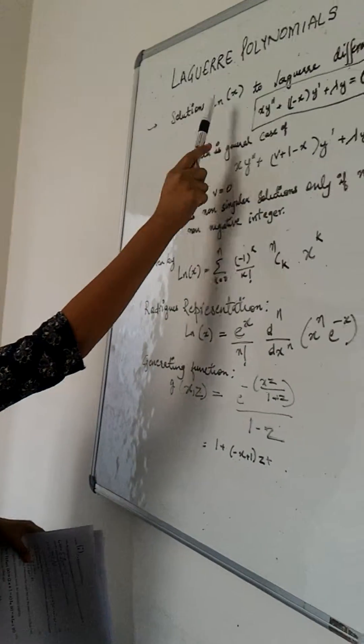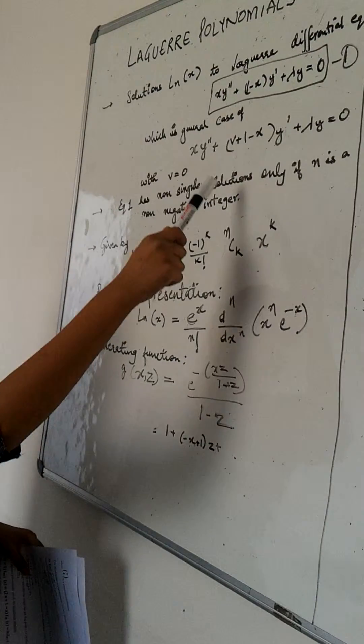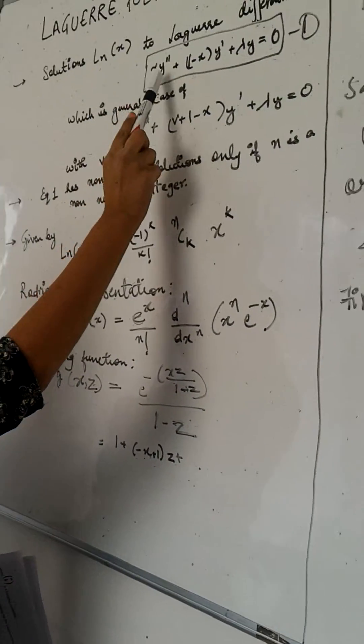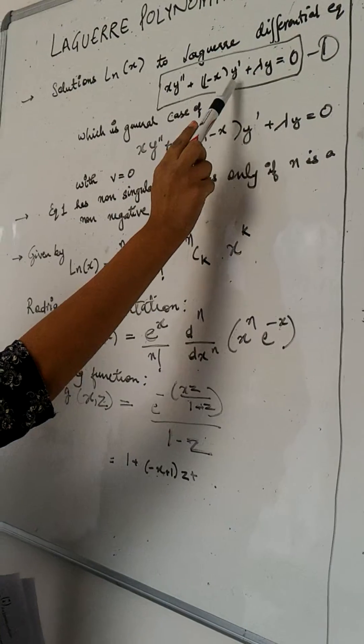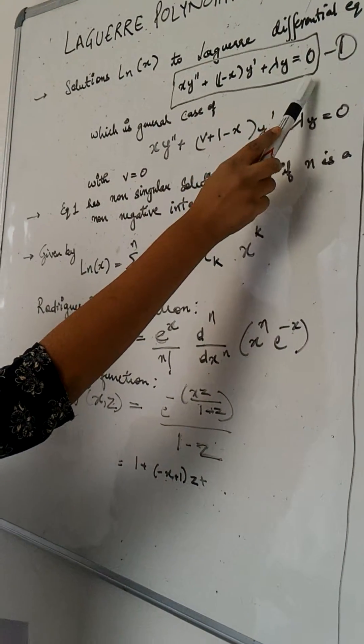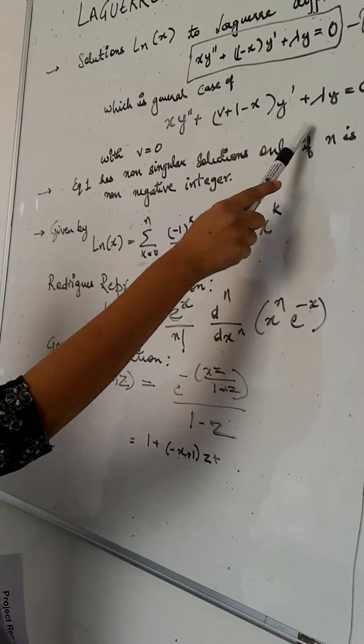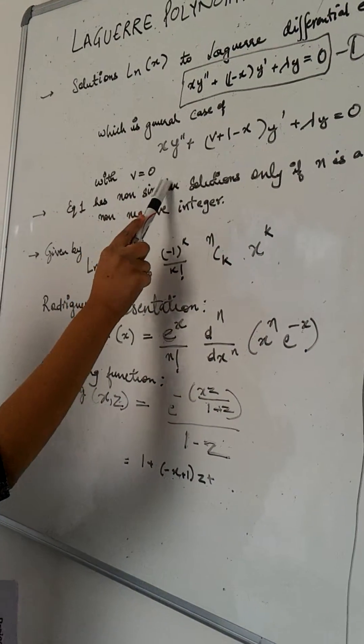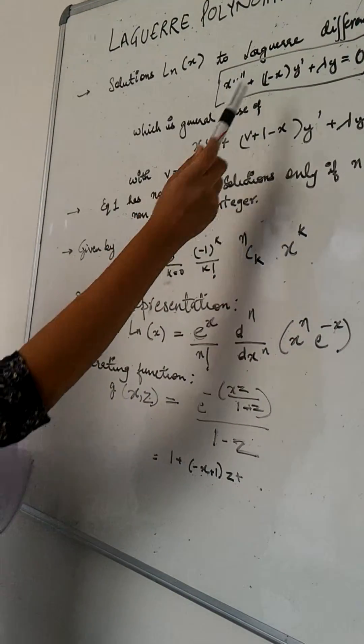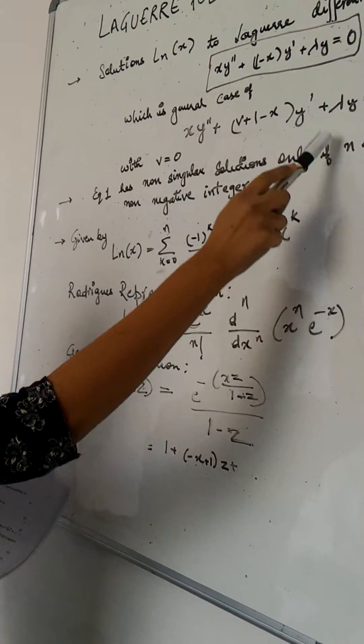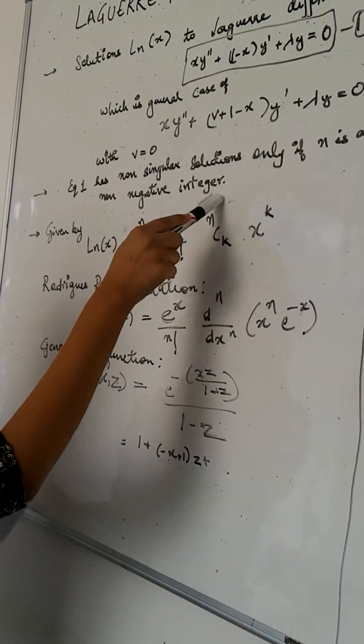Laguerre polynomials are basically solutions to Laguerre differential equation which is given by x y'' + (1-x) y' + λy = 0. Which is basically a general case of this equation where we put v equals to 0. This equation has non-singular solutions only if n is a non-negative integer.